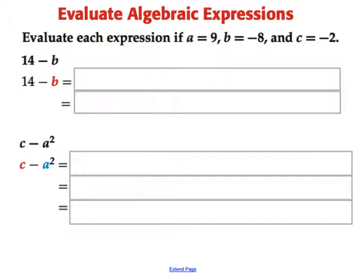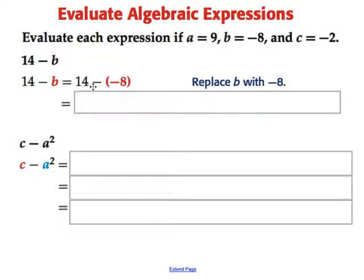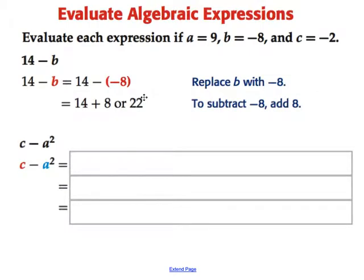Evaluating algebraic expressions this time. To evaluate an expression, they give us what the values of the letters are, the values of the variables. A is 9, B is negative 8, and C is negative 2. If we want to take 14 minus whatever B is, now B is negative in this case, so we're going to plug in negative 8 wherever we see the letter B. So 14 minus B is 14 minus a negative 8. So instead of B, we just put the negative 8 value. And that becomes 14 plus 8, which is 22.